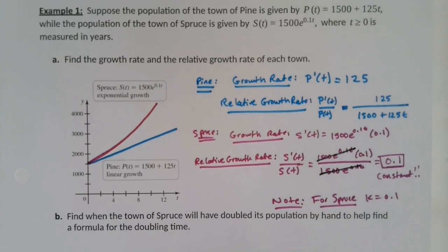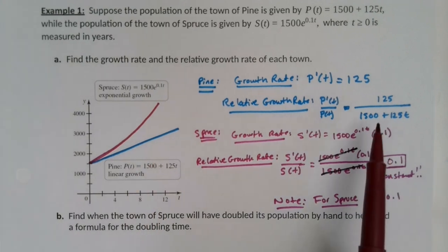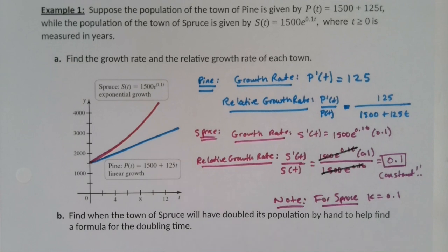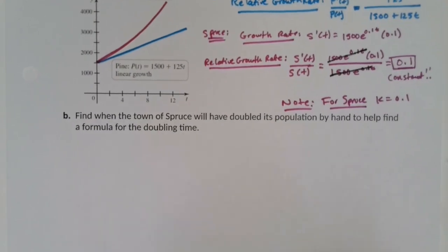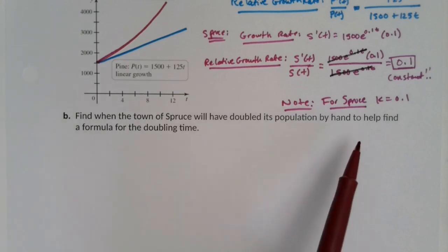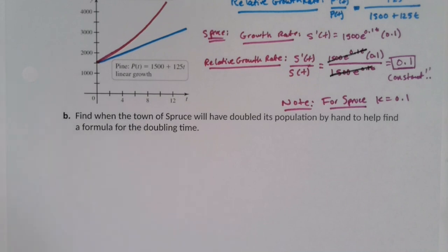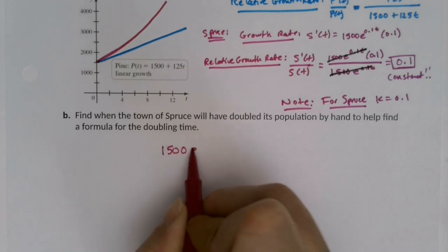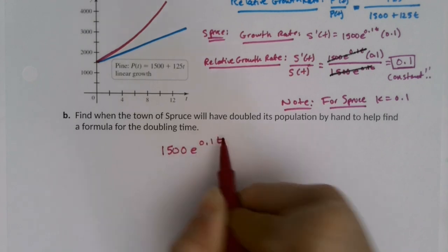Pine is not growing at an exponential rate — you can tell because its relative growth rate is not constant. Now let's use the fact about Spruce to find its doubling time. The town of Spruce will have doubled its population when 1500 e to the 0.1T equals 3000, since that's double the starting value.